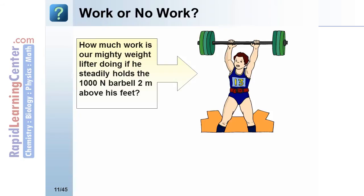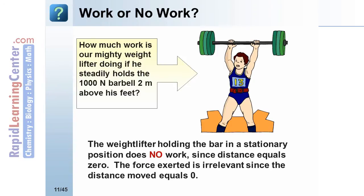Work or no work. How much work is our mighty weightlifter shown here doing if he steadily holds the thousand-newton barbell two meters above his feet? Consider the formula or definition for work. The weightlifter holding the bar in a stationary position does no work, zero, since the distance equals zero. The force exerted is irrelevant since the distance moved equals zero. Any amount of force times zero would give us a product of zero work.